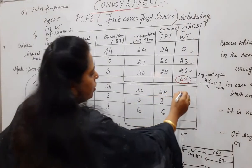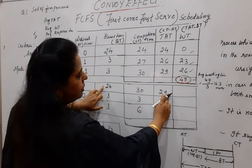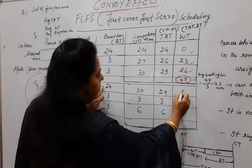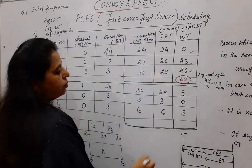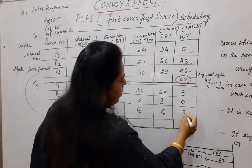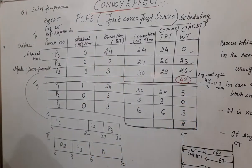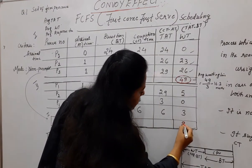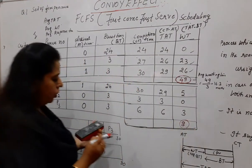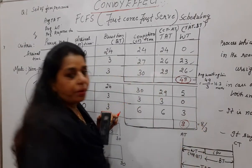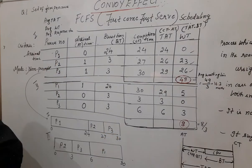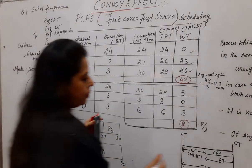Waiting time. Turnaround time minus burst time. 29 minus 24 is 5. 3 minus 3 is 0. 6 minus 3 is 3. How much you got? 5 plus 0 plus 3 is 8. Let me use the red ink here. This is your answer. Now calculate the average waiting time. Average waiting time will be 8 divided by 3 processes. You will get 2.6 milliseconds.